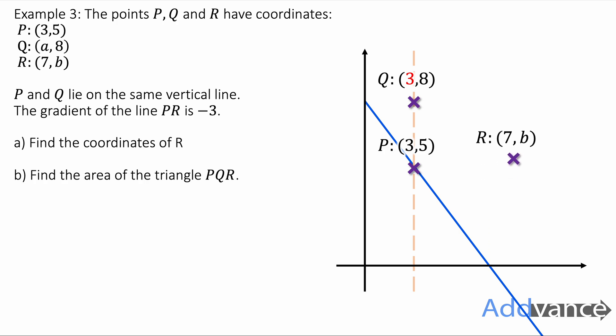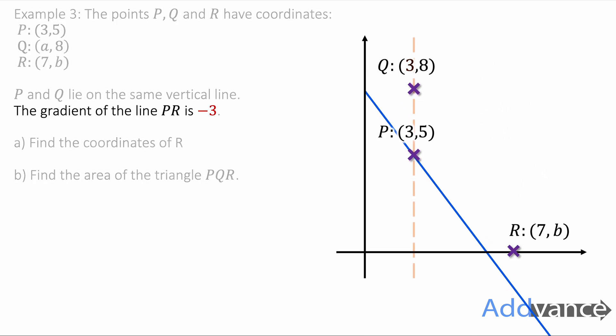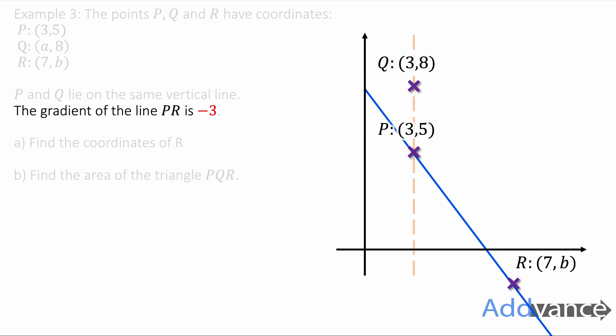So we'll draw a line with a gradient of -3 here. And so R must be touching this blue line. It must be down here somewhere. And we know that we've gone 4 across to go from 3 to 7. The x-coordinate is 7. That means we must go -12 down. Because that's what a gradient of -3 means. If you go 1 across, you go -3 down. 2 across, -6 down. 3 across, -9 down. 4 across, -12 down. And so to go 12 down here, 5 minus 12 is -7. The coordinate of R is (7, -7). And so we've found the coordinates of R.